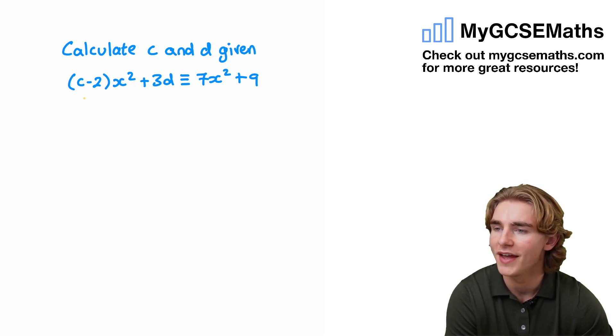How are we going to do this? What we're going to spot is that c-2 is being multiplied by x², and over on the right hand side of our equivalency we have a 7 next to our x².